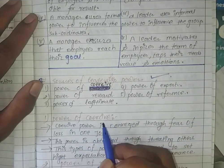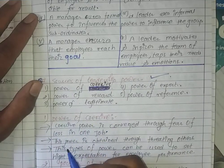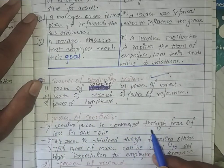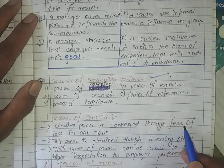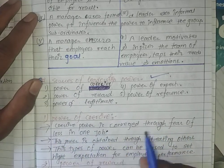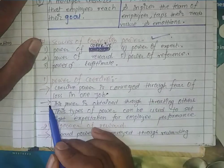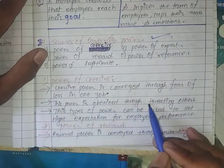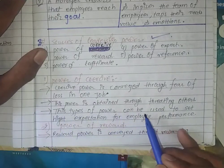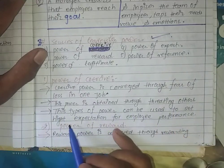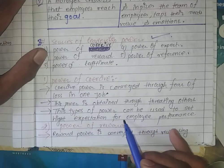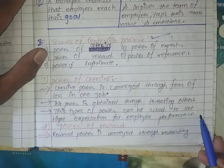Power of Coercive: this is power conveyed through fear of loss of one's job. The power is obtained through threatening others. This type of power can be used to set high expectations for employee performance.